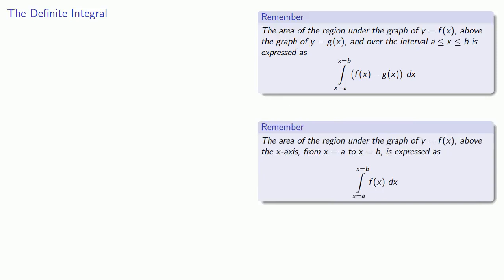There's one useful variation on this. If I want to find the area of the region under the graph of y equals f(x), above the x-axis, from x equals a to x equals b, then my second curve is y equals 0, and so f(x) minus g(x) just becomes f(x), and my definite integral looks like this.